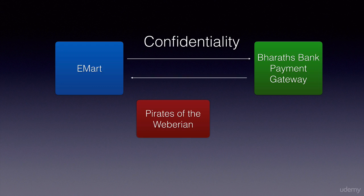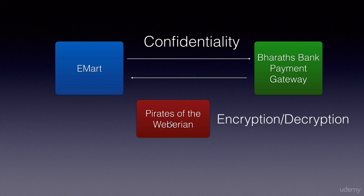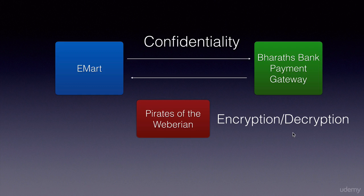In WS Security, we make sure that even if the hacker finds the message, he will not be able to make sense out of it, by using WS Security's encryption and decryption. On the client side, when the message is sent, we encrypt it; on the server side, we decrypt it. On the way back, we encrypt the response, and on the client side, we decrypt it. We will work hands-on on all that later on.